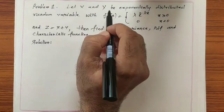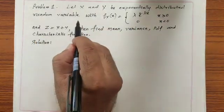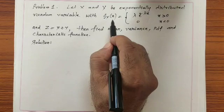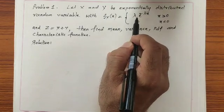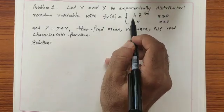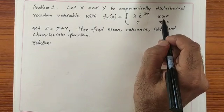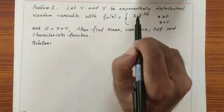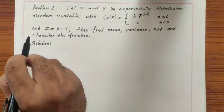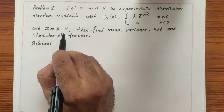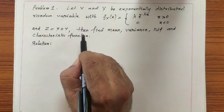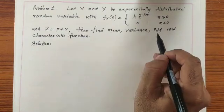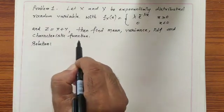Let x and y be exponentially distributed random variables with probability density function f_x(x) equal to lambda·e^(−λx) whenever x ≥ 0, and 0 whenever x < 0, where lambda is a parameter. And z is the sum of these two independent random variables. We need to find the mean, variance, probability density function, and the characteristic function.